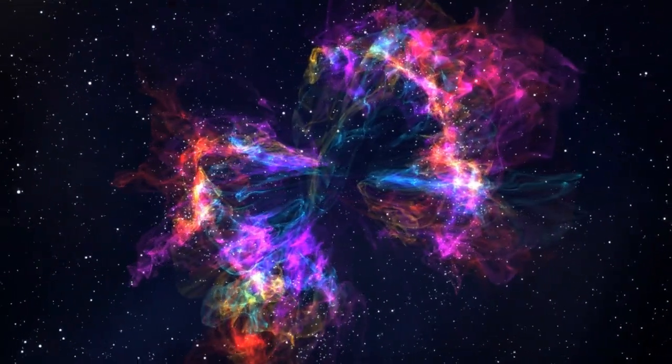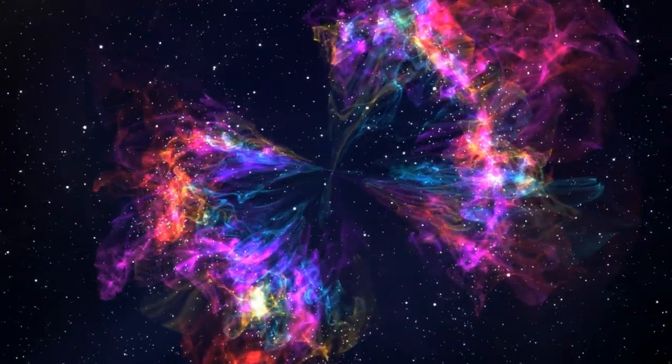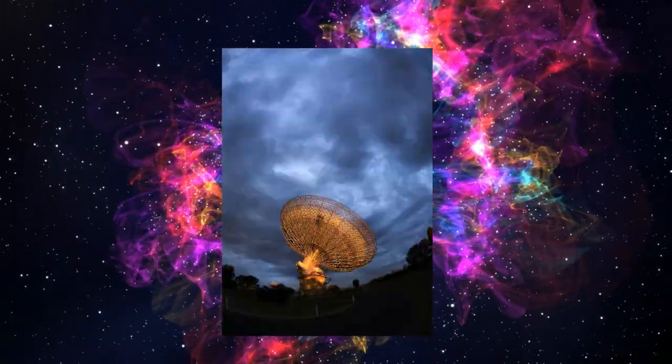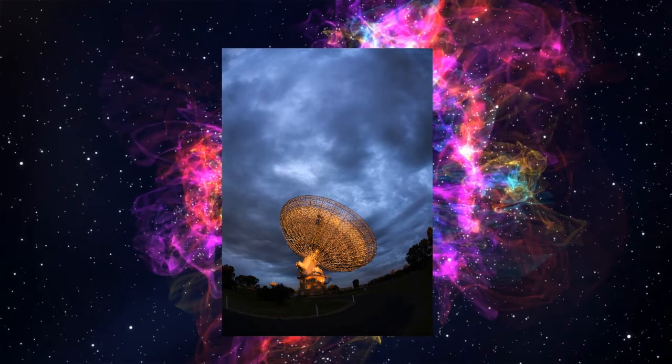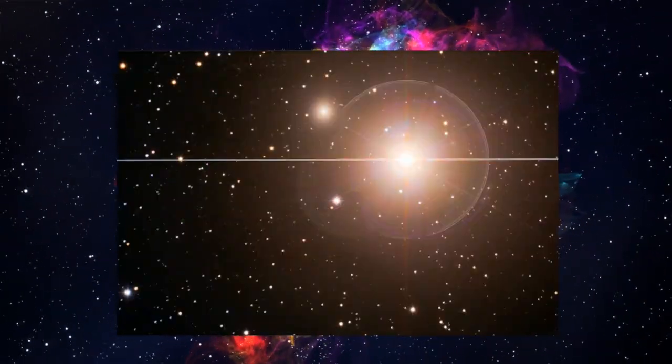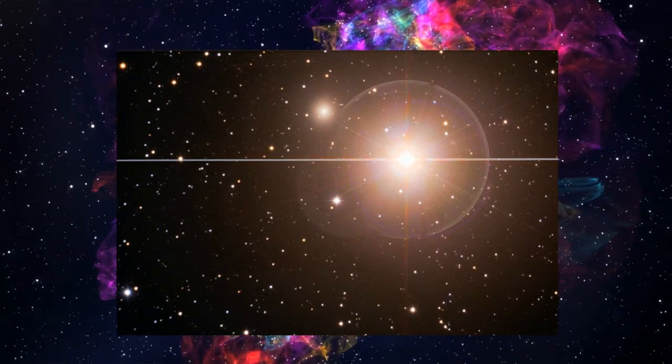And our third story involves an alien signal dubbed BLC-1. Astronomers on behalf of the Breakthrough Listen Project, using the Parkes Radio Telescope in Australia, detected a signal from nearby Proxima Centauri, a mere 4.2 light-years away. In galactic terms, this is our backyard. It is the nearest star system to Earth.